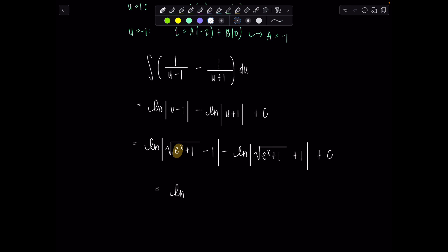And then we can also use our properties of logarithms to combine them. So we'll just have natural log. Hold on, that was very ugly looking natural log. Better redo that. Okay, natural log of square root e to the x plus 1 minus 1 over, and you don't need absolute value anymore, square root e to the x plus 1 plus 1 plus c.